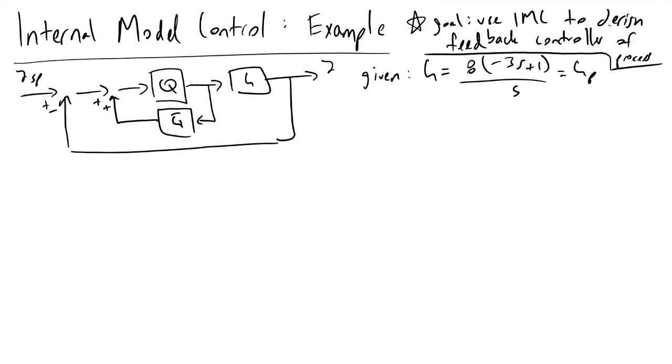Let's say we've been given some kind of process, G, which has the form 8 times quantity minus 3s plus 1 over s, and we are told to design a feedback controller using internal model control. And in this example or video, I will go over how we can go about doing that.